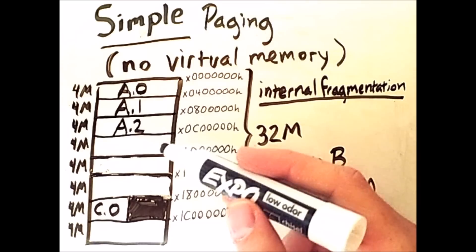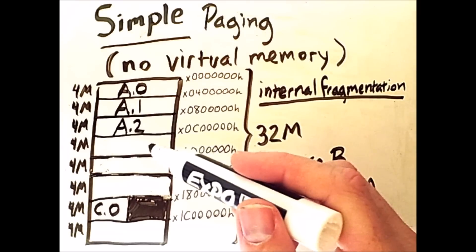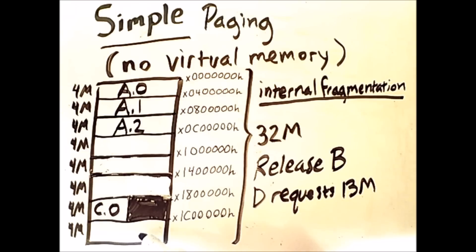So now we have some empty frames in the middle of memory, and this is where things get interesting. Because when D requests its 13 megabytes, we will put the first three pages of D into these first three frames, but the fourth page can actually be put in this frame that is on the other side of the frame occupied by C. In other words, it is completely okay to split up the individual pages of the process across various frames in memory.